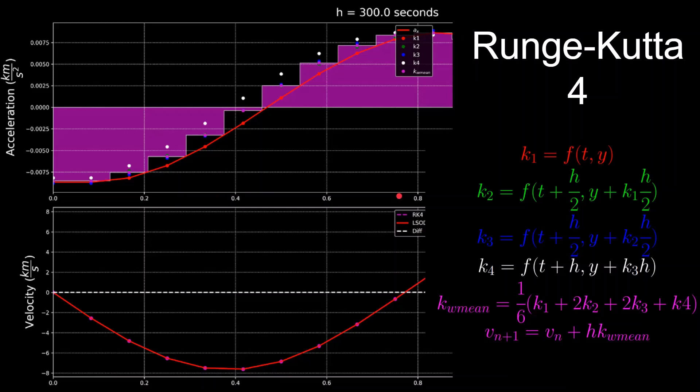And these are a family of methods because you can choose any order you want, with the most common being fourth and fifth order. And this is a fourth order method because we are evaluating the derivative four different times in order to gain a better estimate of the derivative value for our given time step.